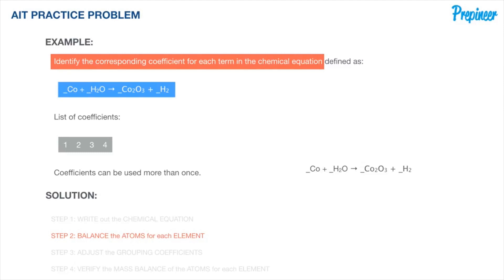We must keep those subscripts in mind, because we will account for each subscript for each element to help us establish balance. Starting with cobalt: looking at the number of atoms, there is one cobalt atom in the reactants and two cobalt atoms in the product. With two cobalts on the right side of the equation, we must add one on the left side to create balance. We can now see that there are two cobalts on each side.